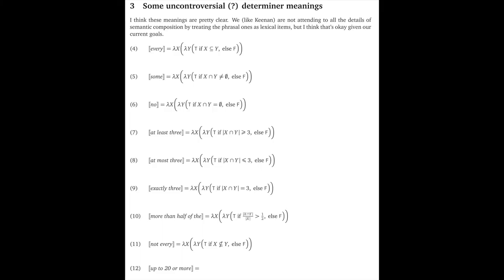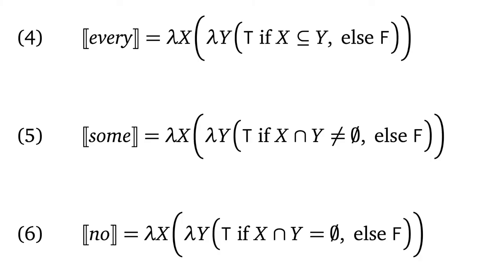Final section for this introductory screencast, section three, some uncontroversial determiner meanings. I think these are uncontroversial, but you never know, so I put a question mark after uncontroversial. I'm open to exploration. But to start, so we've seen every in four, which is built from the subset relation. We've seen some, that's given in five. It's built from a test for a non-empty intersection between the restriction and the scope. And no is its contrary. It tests for an empty intersection between the restriction and the scope.